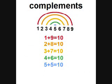Central to most of these patterns is the concept of the tens complement. Tens complements are two numbers that add up to ten: one and nine, two and eight, three and seven, four and six, and five and five.